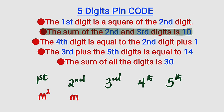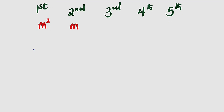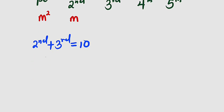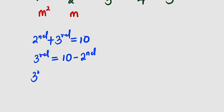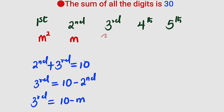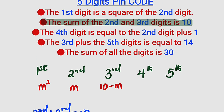From the second statement, the sum of the second and third digits equals 10. So: second digit plus third digit equals 10. Making the third digit the subject, the third digit equals 10 minus the second digit. Since the second digit is m, the third digit equals 10 minus m.